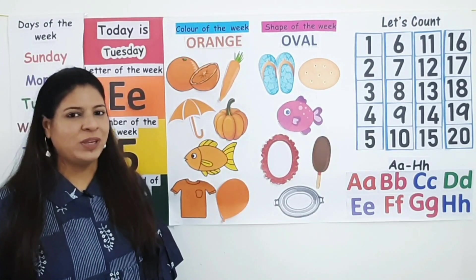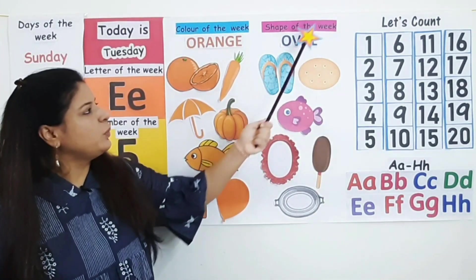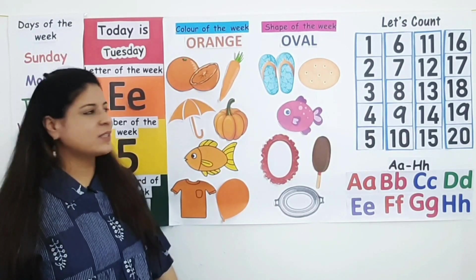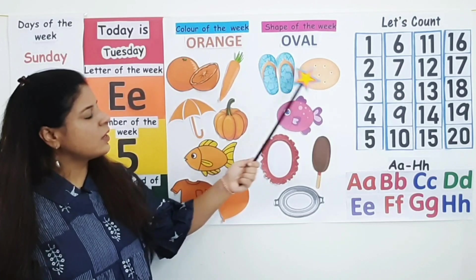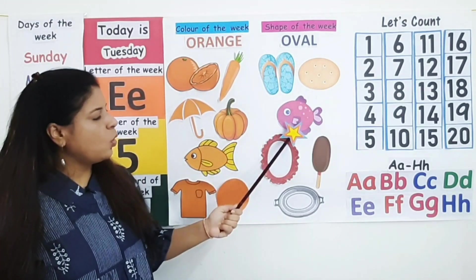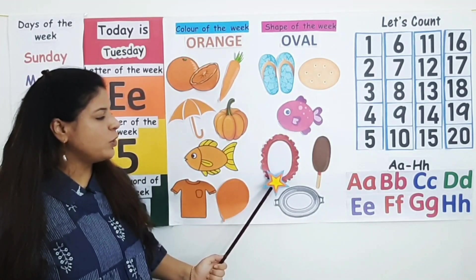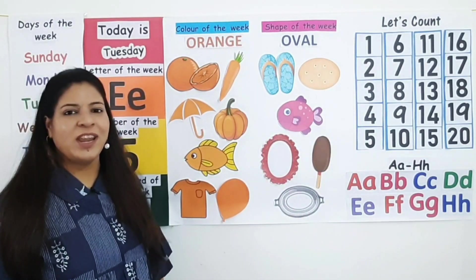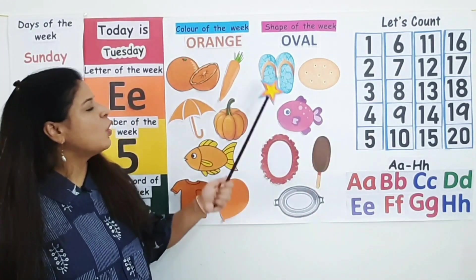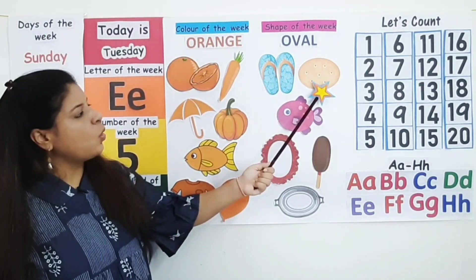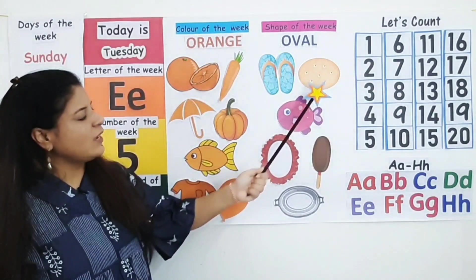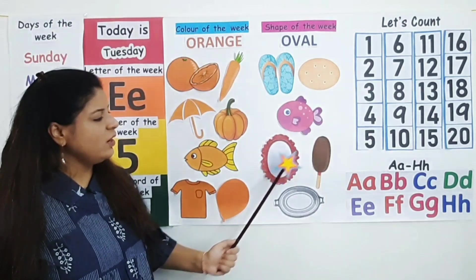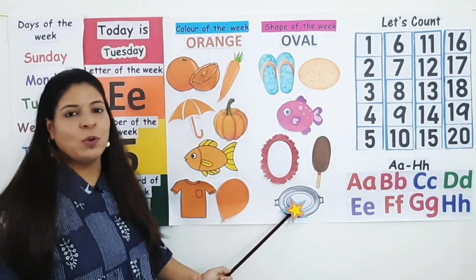Now let's see the shape of the week. Shape of the week is oval. Now let's see the pictures — oval shaped slippers, oval shaped biscuit, oval shaped fish, oval shaped mirror, oval shaped ice candy, oval shaped tray. Now say along with me — oval shaped slippers, oval shaped biscuit, oval shaped fish, oval shaped mirror, oval shaped ice candy, oval shaped tray.